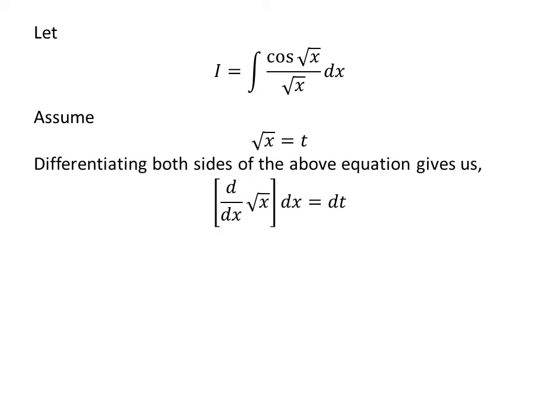Taking the differential of both sides gives us the derivative of square root of x with respect to x times differential of x equals differential of t.